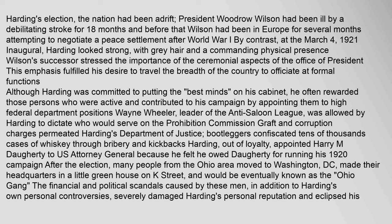Wayne Wheeler, leader of the Anti-Saloon League, was allowed by Harding to dictate who would serve on the prohibition commission. Graft and corruption charges permeated Harding's Department of Justice; bootleggers confiscated tens of thousands of cases of whiskey through bribery and kickbacks. Harding, out of loyalty, appointed Harry M. Daugherty to U.S. Attorney General because he felt he owed Daugherty for running his 1920 campaign. Many people from the Ohio area moved to Washington, D.C., and would eventually be known as the Ohio Gang.